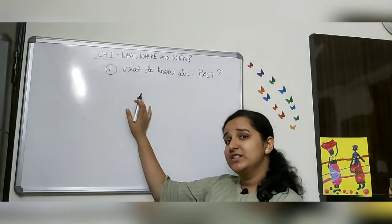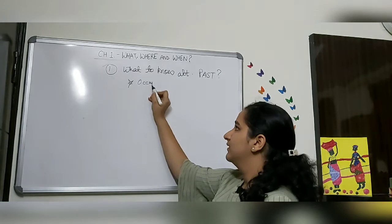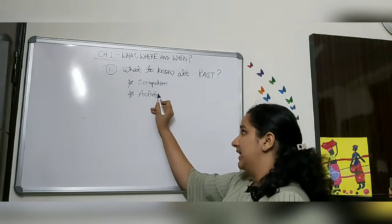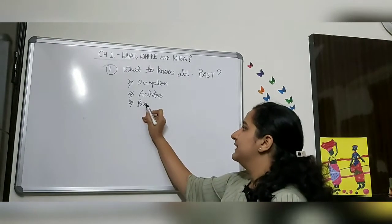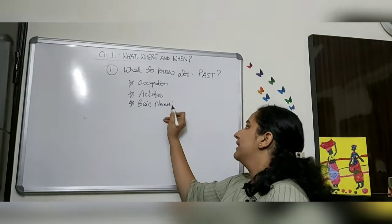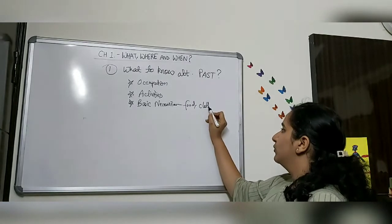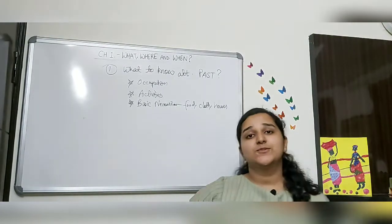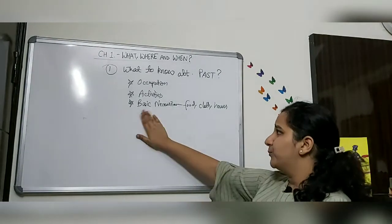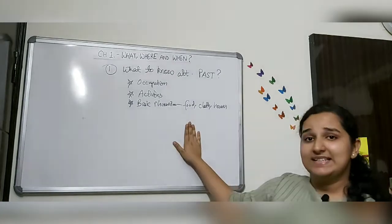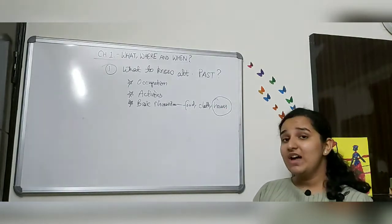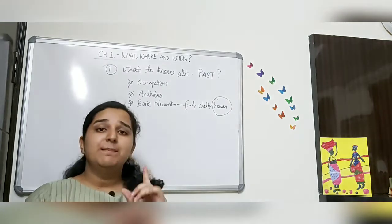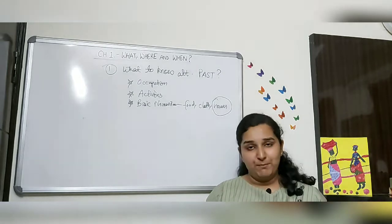So the three things we can know about the past are: number one, occupation; number two, daily activities they did in their free time; number three, basic necessities — the type of houses, food, clothing. These are the basic things we can know about our past. We will begin with basic necessities, starting with houses, and I will create a flow chart about the types of habitat people lived in.